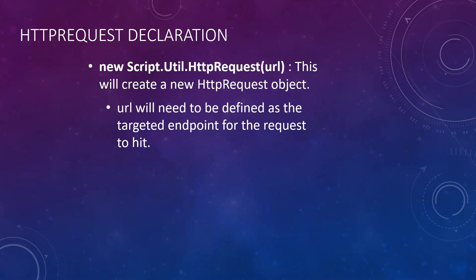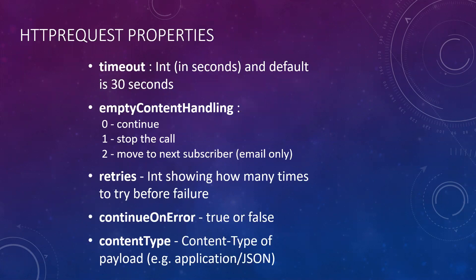Next up is the properties. We have the timeout, which is an integer measured in seconds — different from JavaScript which uses milliseconds. The default is 30 seconds. In general, that should be more than enough time to handle your calls, but if you need to shorten or lengthen it, you have that capability here.